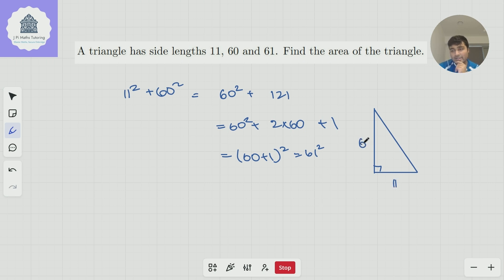Anyway, so we have a side length of 11, side length of 60, side length of 61. We want to know the area of this triangle. We can just use half base times height, of course. So half times 11 times 60 is 11 times 30, which is going to be 330.